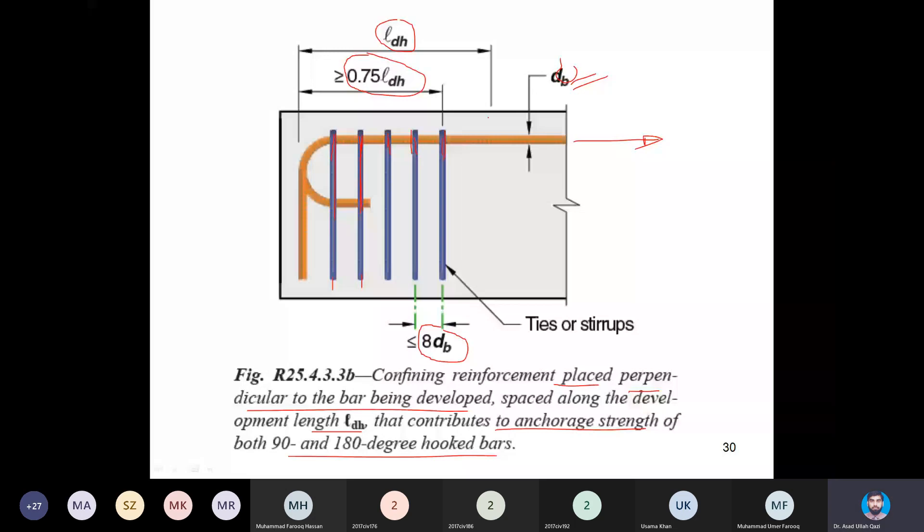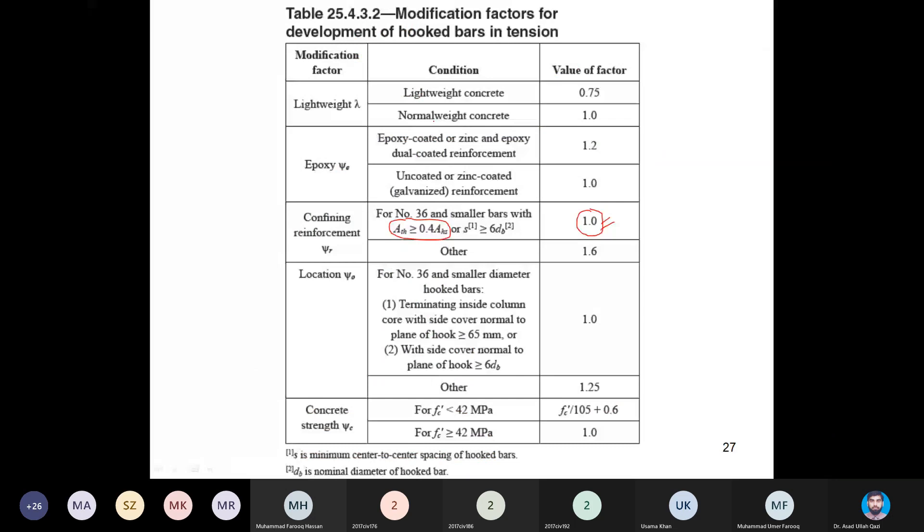If this kind of detailing is present along the zone of development of hooked bar, then you are allowed to take them as ATH. You will count them. For example, just for sake of example, I tell you that there were actually two ties, exactly two ties.